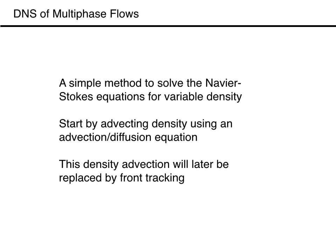We start by developing the code for flow where the viscosity is constant and there is no surface tension, and the density, which also serves as a marker to identify the different fluids, is updated by solving an advection diffusion equation. The diffusion is added for numerical purposes and is removed once we have introduced front tracking to follow the interface between the different fluids.